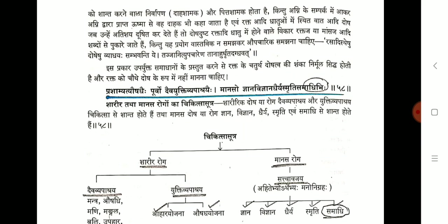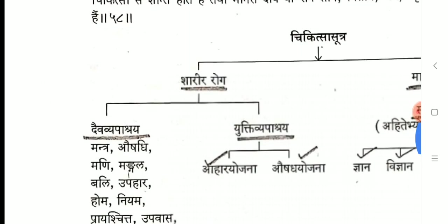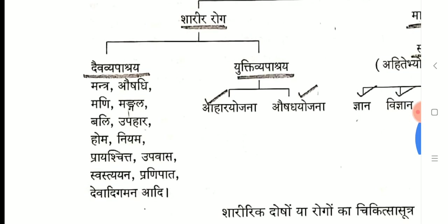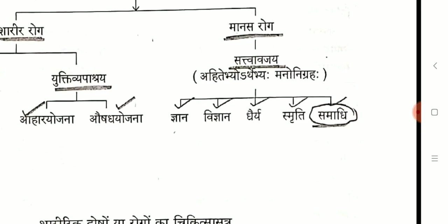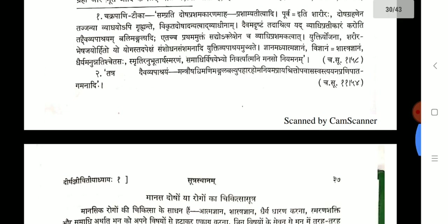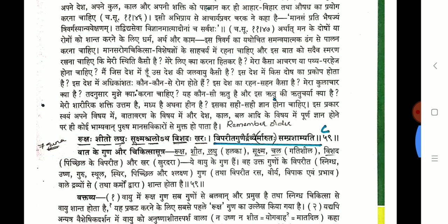Chikitsa Sutras: there are two Chikitsa Sutras explained for Sharirika and Manasika. For Sharirika, there are two: Daiva Vyapashraya and Yukti Vyapashraya. For Manasika Roga, Sattva Avajaya is the treatment. In Sattva Avajaya, five Chikitsa Sutras are listed: Jnana, Vijnana, Dhairya, Smriti and Samadhi. Note the word Samadhi carefully — a tricky question may form because it may be confused with the Samadhi of Ashtanga Yoga.